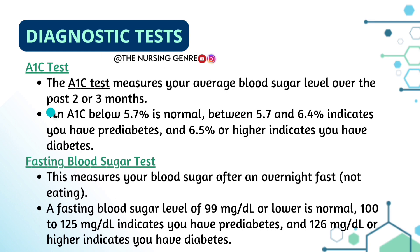Diagnostic tests: The A1C test measures your average blood sugar level over the past 2 to 3 months. An A1C of 5.7% to 6.4% indicates pre-diabetes; 6.5% or higher indicates diabetes.